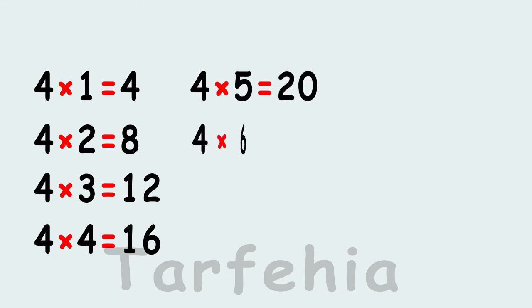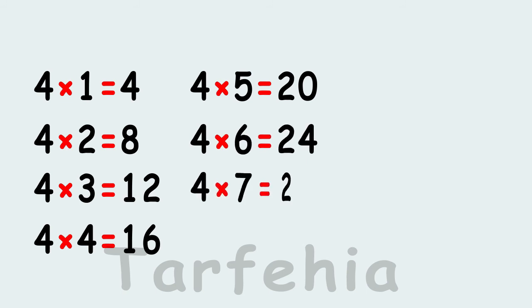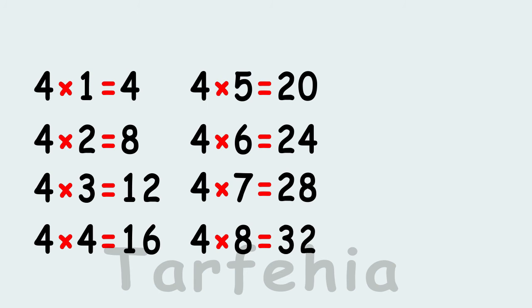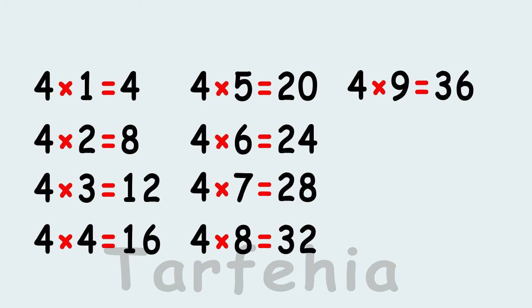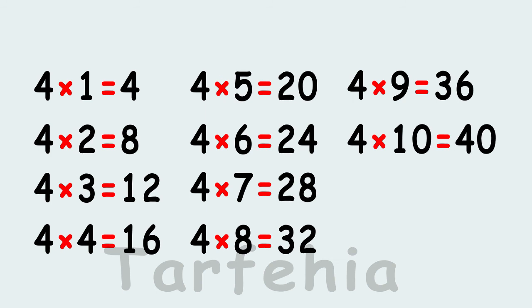Four times six equals twenty-four. Four times seven equals twenty-eight. Four times eight equals thirty-two. Four times nine equals thirty-six. Four times ten equals forty. Four times eleven equals forty-four.